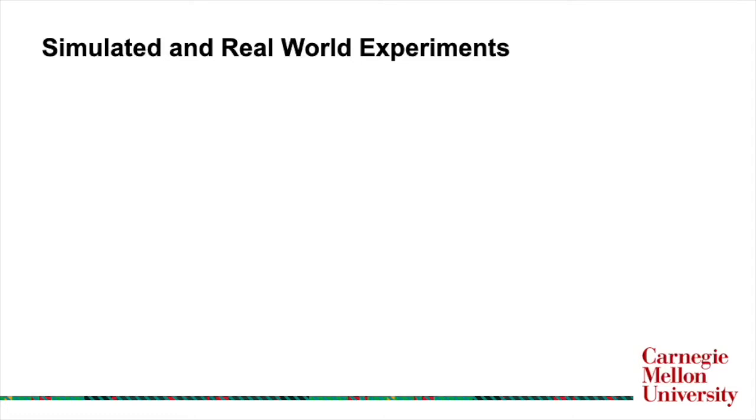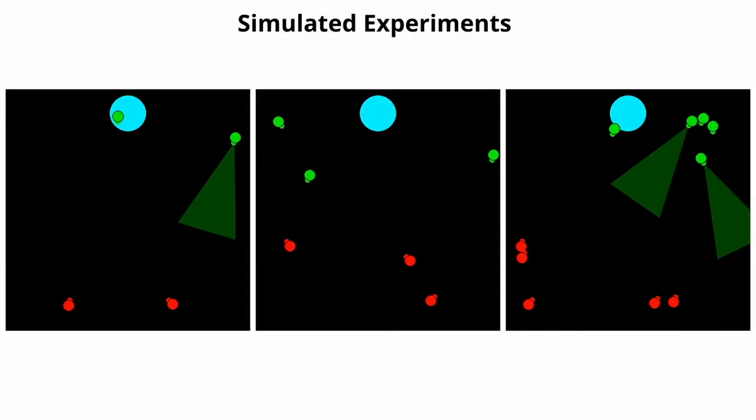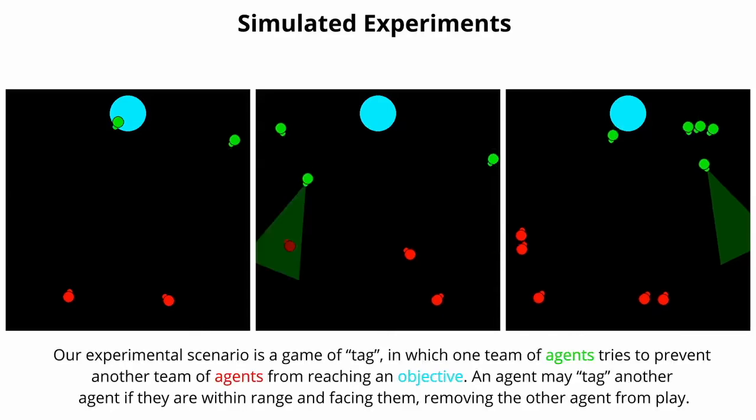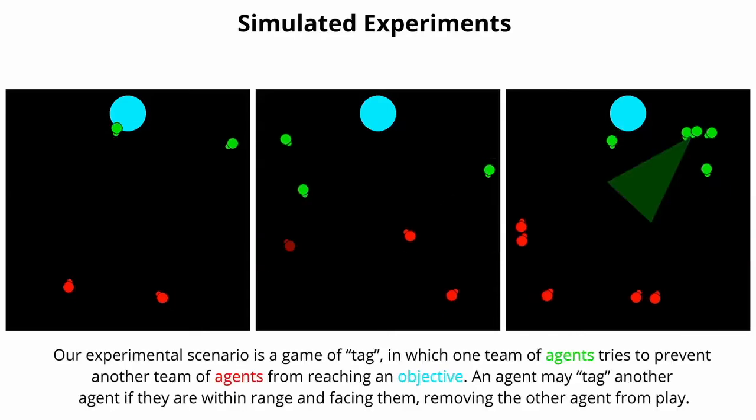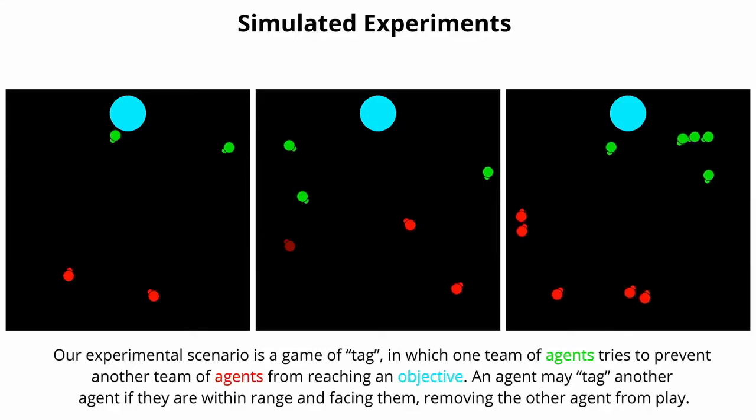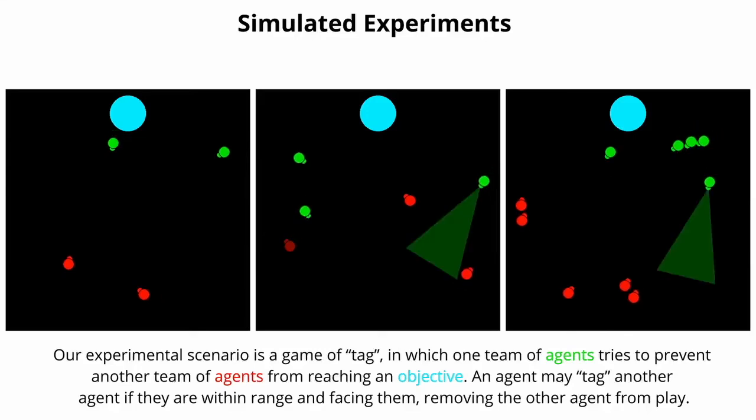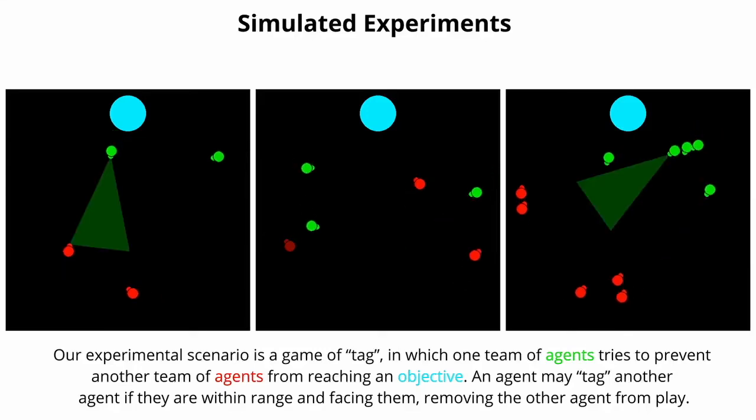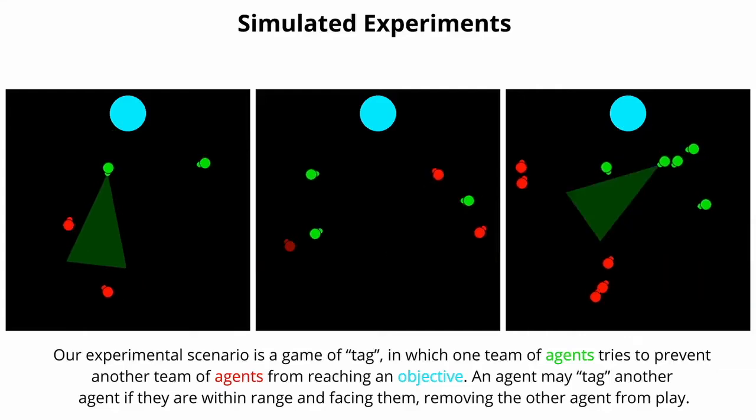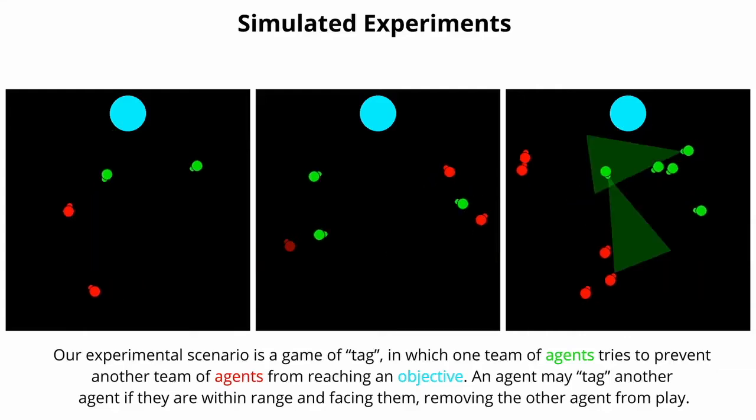Now we move on to the simulated and real-world experiments that we performed. This is the experimental scenario, which is a game of tag, in which one team of agents tries to prevent another team of agents from reaching an objective. An agent may tag another agent if they are within range and facing them, removing the other agent from play.